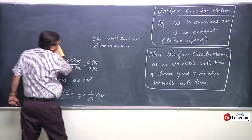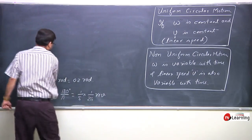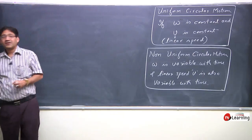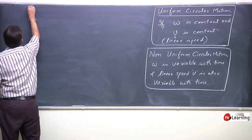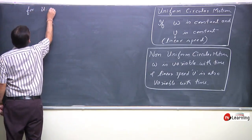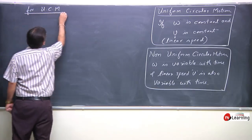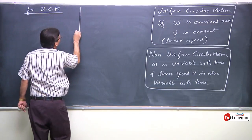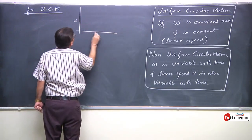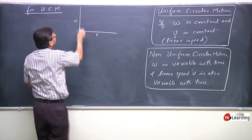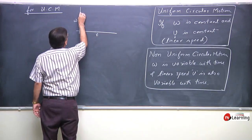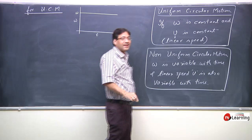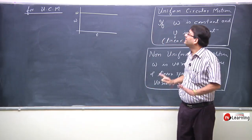Graphically, I will explain this concept. For Uniform Circular Motion, with time, omega would remain constant — omega is not changing at all with time. Omega remains constant throughout.